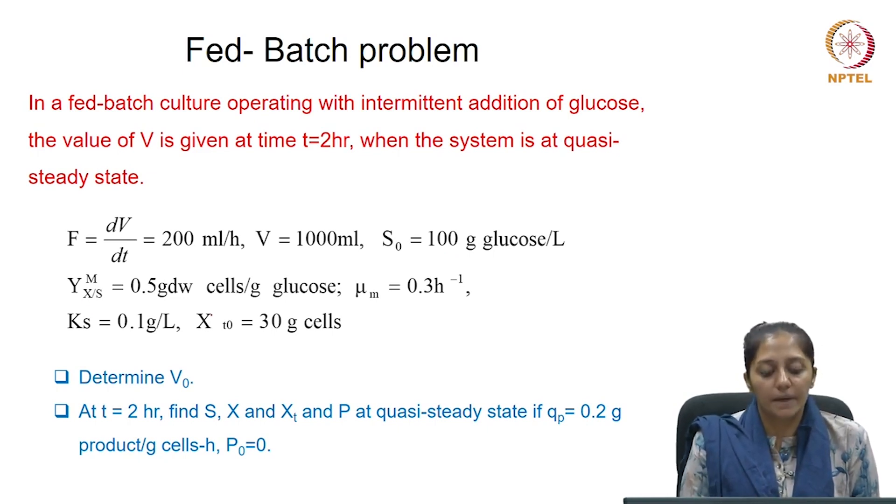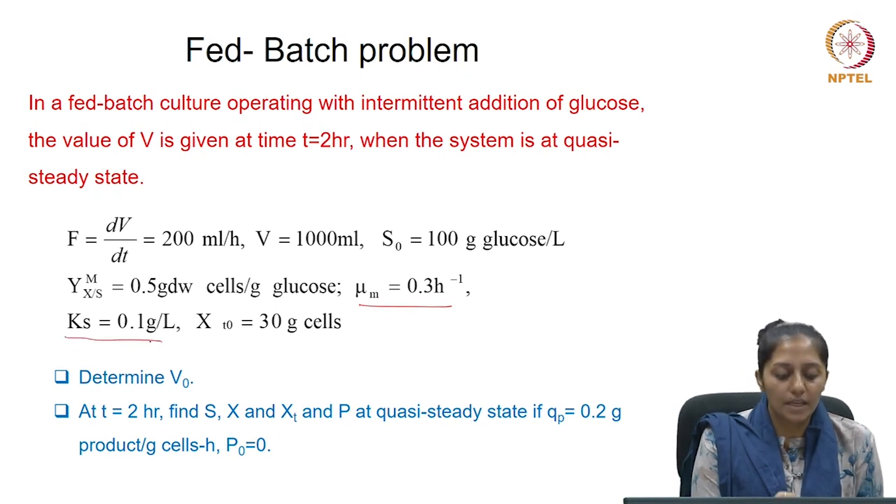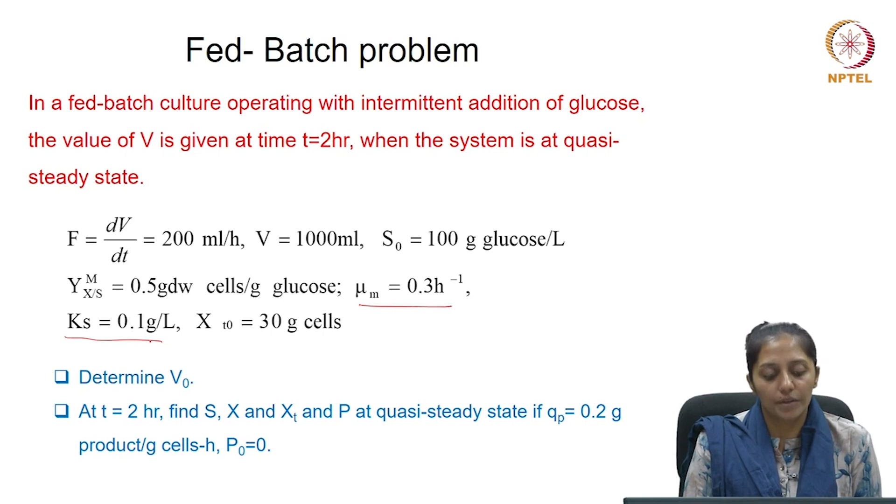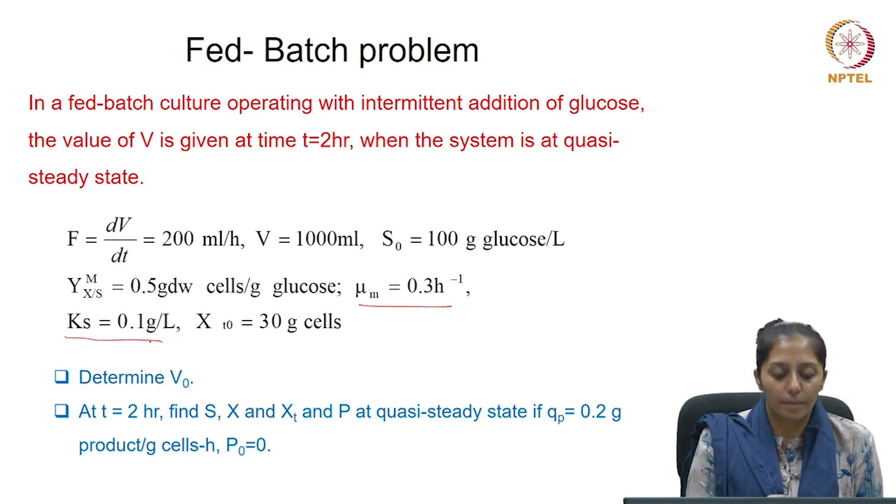The theoretical Y_X/Y_S is given to us, maximum 0.5. The maximum specific growth rate of the culture is 0.3 per hour. The Monod saturation constant is also given to us, 0.1 grams per liter, which indicates that the culture is following Monod's model.